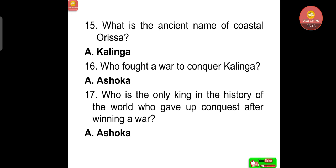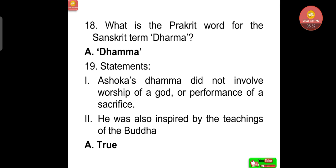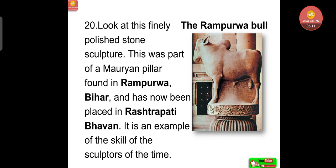Who is the only king in the history of the world who gave up conquest after winning a war? That was Ashoka, after the Kalinga war. What is the Prakrit word for the Sanskrit term Dharma? That is Dhamma. Ashoka's Dhamma did not involve worship of a god or performance of a sacrifice, and he was also inspired by the teachings of the Buddha — both statements are true. Now look at this finely polished stone sculpture — the Rampurva Bull. This was part of a Mauryan pillar found in Rampurva, Bihar, and has now been placed in Rashtrapati Bhavan. It is an example of the skill of sculptors of that time and can come as an MCQ.